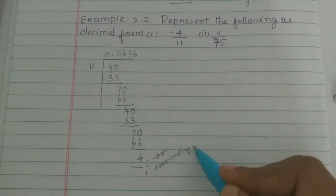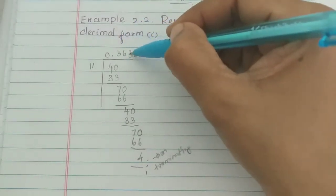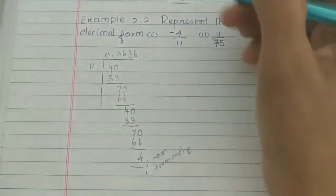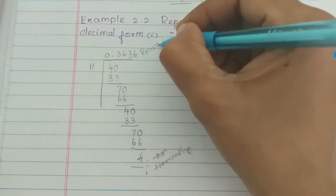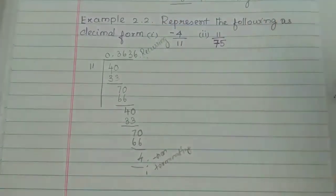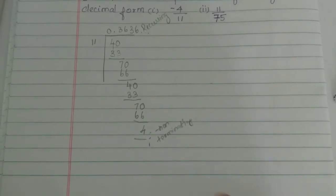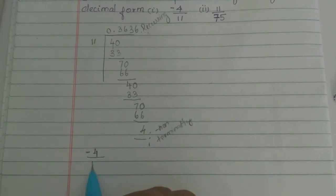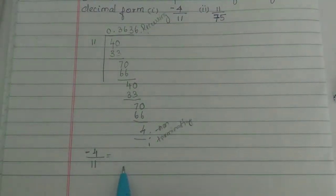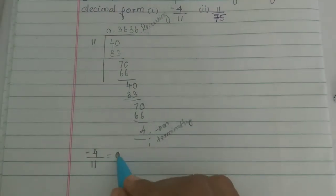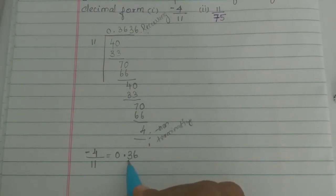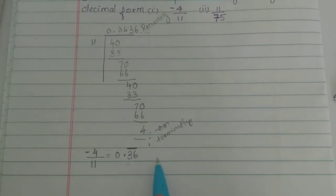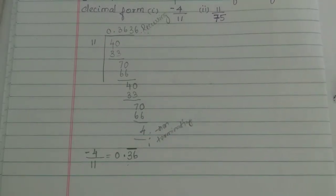If you look at the quotient, one of two numbers — 3 or 6 — is repeated. This is called recurring. So minus 4 by 11 is a rational number. We represent it as minus 0.36 bar, meaning the digits 3 and 6 repeat.